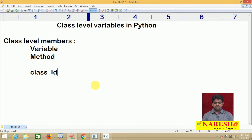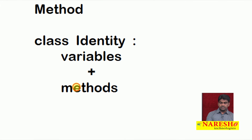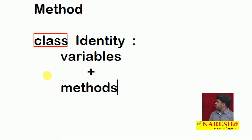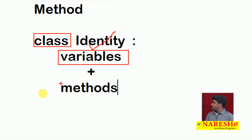Every class should have an identity — a class name. Inside the class we write only two things: a set of variables and a set of methods. In object oriented programming everything must be placed inside the class. Every class has an identity and inside the class we write variables and methods.